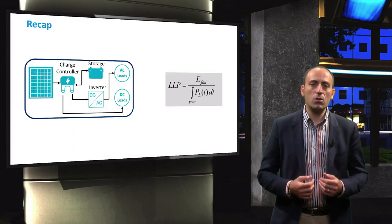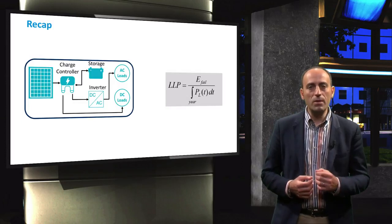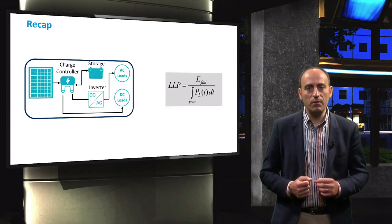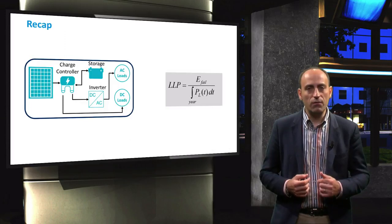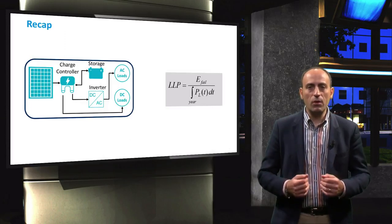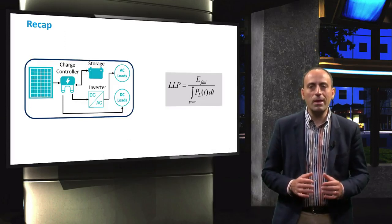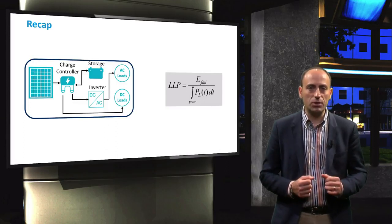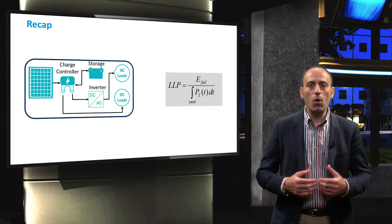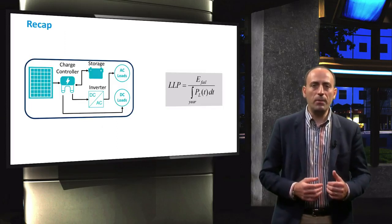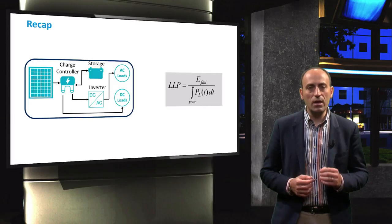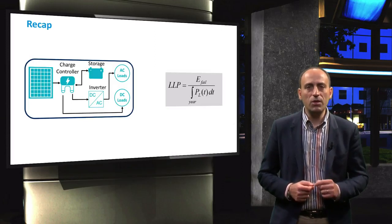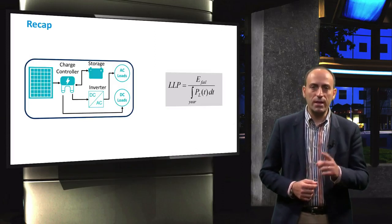To conclude, in this video we discussed the loss of load probability as a performance indicator of a standalone PV system. You will see in a later video that the design evaluation of a standalone PV system is based on achieving appropriate LLP values for a particular application. The design will only be approved if the LLP levels of a PV system design are sufficient. In the next video we shall begin modeling the standalone PV system.